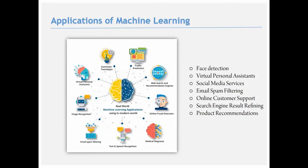Machine learning is applied in many real-world applications. Major companies like Google, Facebook, and Amazon all use machine learning. Applications include facial detection (implemented with CNNs, showing bounding boxes around faces), virtual personal assistants, social media recommendations, spam filtering, and product recommendations (mainly using unsupervised learning).